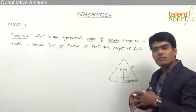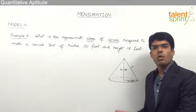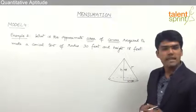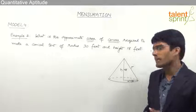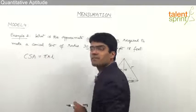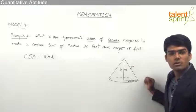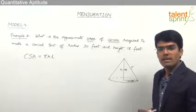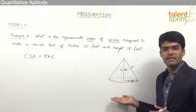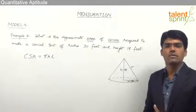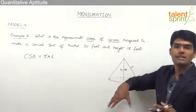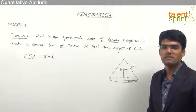When we make a conical tent, cloth is not required for the base — the cloth is required only for the curved surface or lateral surface. So the area of the canvas is nothing but the curved surface area of the cone. Do not take the area of canvas as the total surface area, because total surface area includes curved surface area plus the area of the base circle. Since no cloth is placed on the base, the answer is the curved surface area, which is πrl.